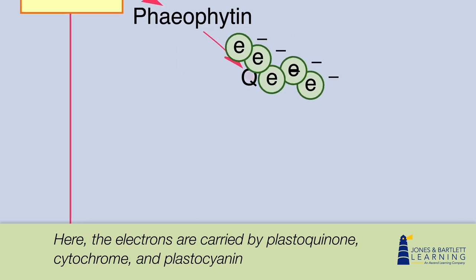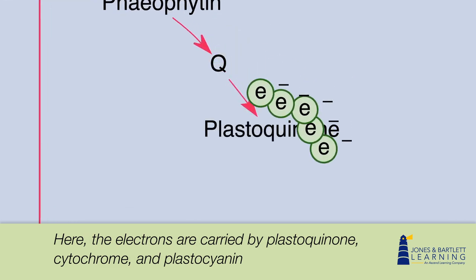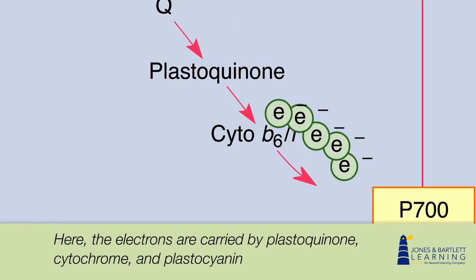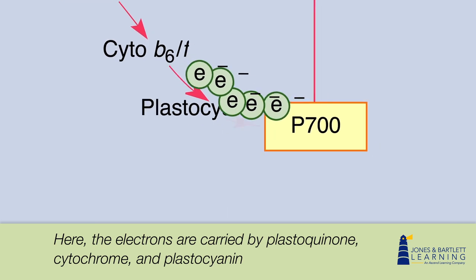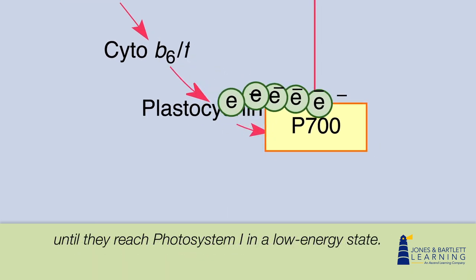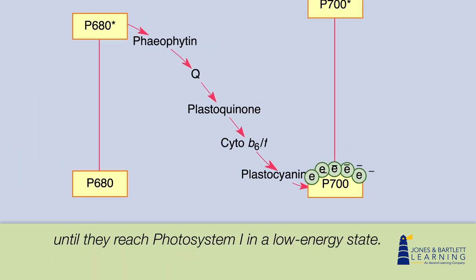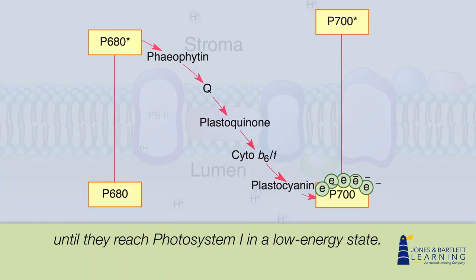Here, the electrons are carried by plastoquinone, cytochrome, and plastocyanin until they reach photosystem 1 in a low energy state.